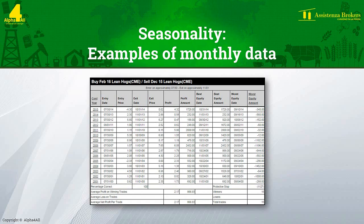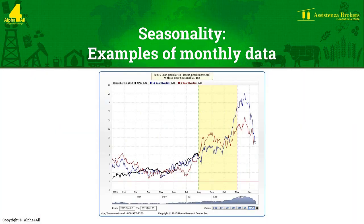Continuing with the lean hogs proposal, we're able to access a chart with information relating to it. This shows us the seasonal trend in the spread on pork. The black line identifies the spread in progress, whilst the blue line represents the average of the trend of the past 15 years, with the red line showing the average of the last 5 years. Now observe the yellow band — this identifies the seasonal window recommended by the Moore Research Site as the preferred time to carry out the trade. Remarkable information, isn't it?